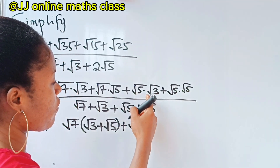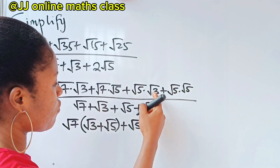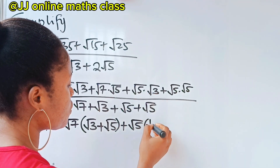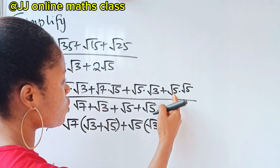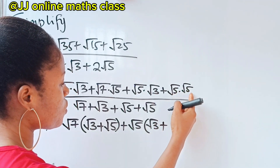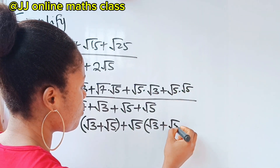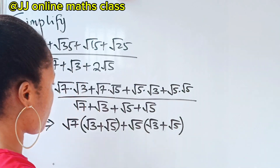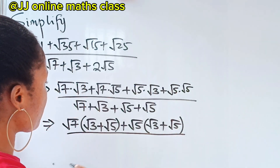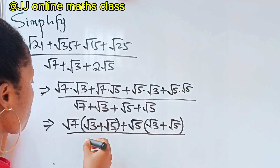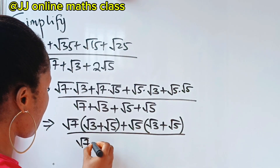Now here the common term is √5, so let's bring that out. √5 × √5 divided by √5 leaves √5, and √5 × √3 divided by √5 leaves √3. So we have √7(√3 + √5) plus √5(√5 + √3).